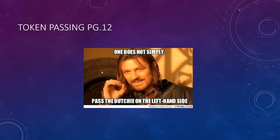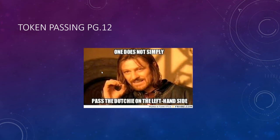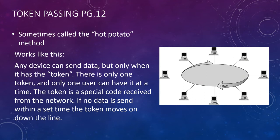Token passing, sometimes called hot potato: any device can send data, but only when it has the token — there's only one token and only one user can have it. The token is a special code received from the network. Once you get it, if you don't send any data within a set time, the token moves on to the next device. If you've got data, you send it; if not, it moves on.